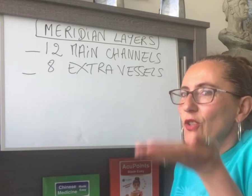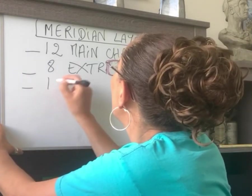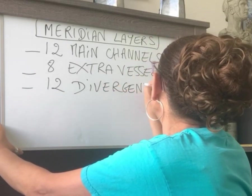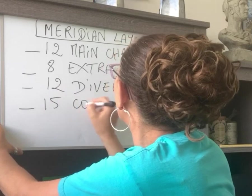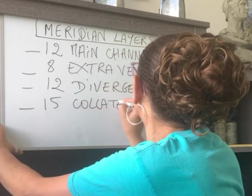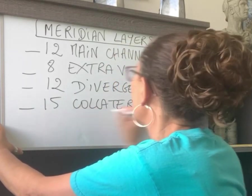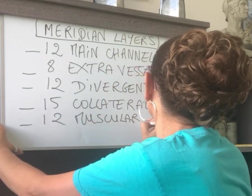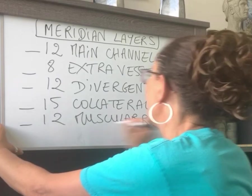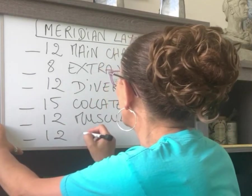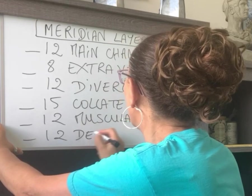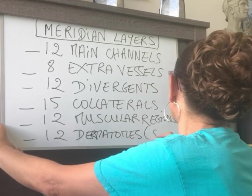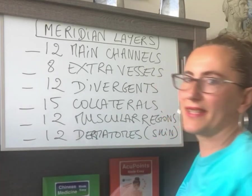Moving to the next layers, going a little bit more superficial: we have the 12 divergences, then the 15 collaterals, then the 12 muscular regions, and then the 12 dermatomes — also called subcutaneous or dermatomes — which are our superficial layers, basically our skin.